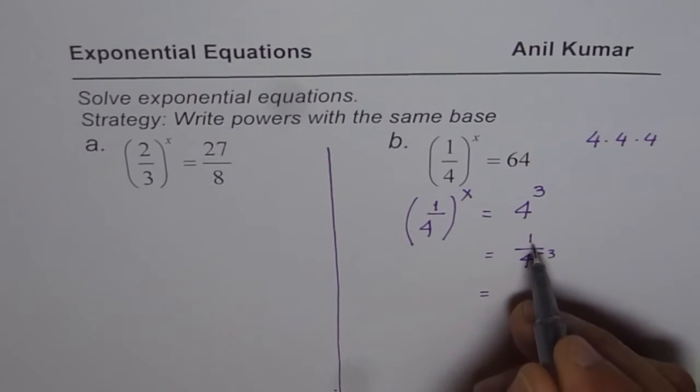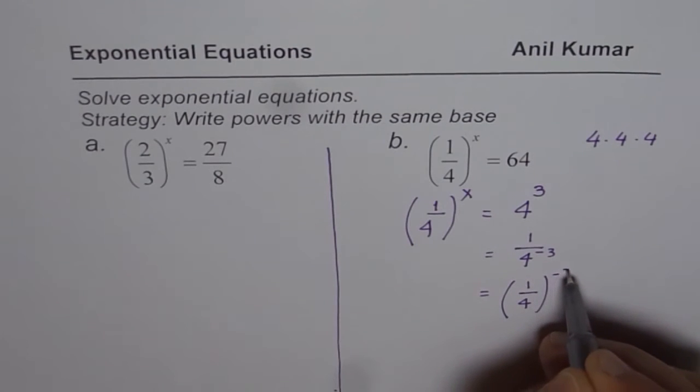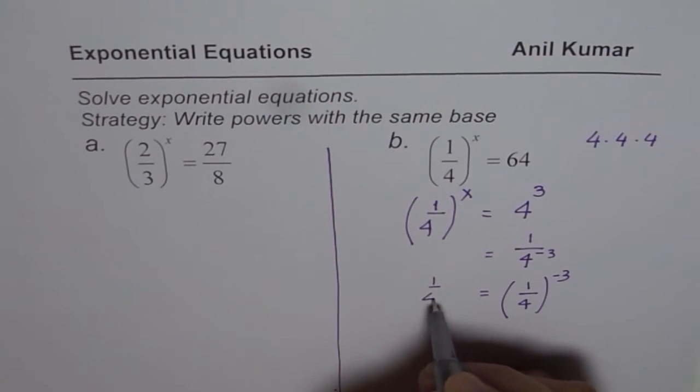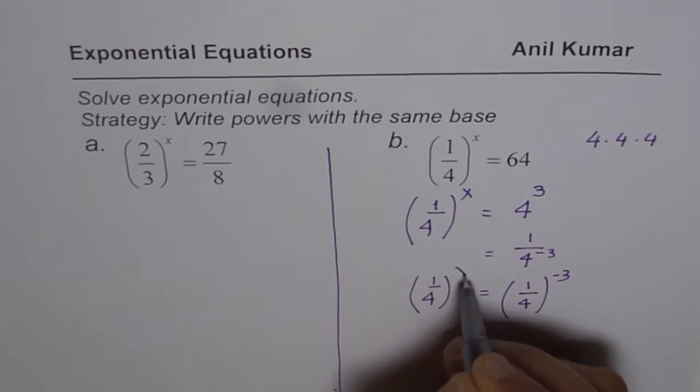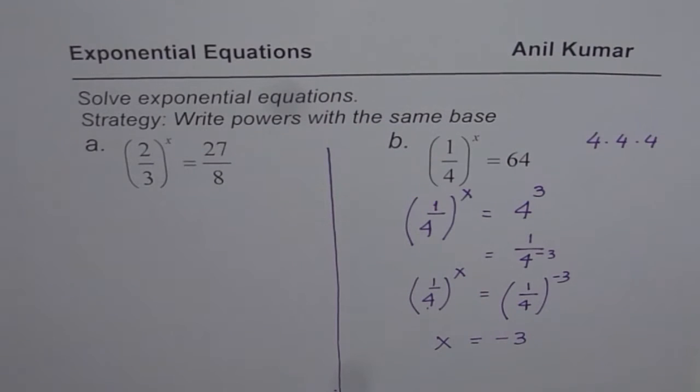And further, we know 1 over 4 to the power of anything is 1 itself. So I could write this as 1 over 4 to the power of minus 3. So we have 1 over 4 to the power of x equals to 1 over 4 to the power of minus 3. Since the two bases are same, exponents should also be equal. So we get our answer. That is how you can actually solve.